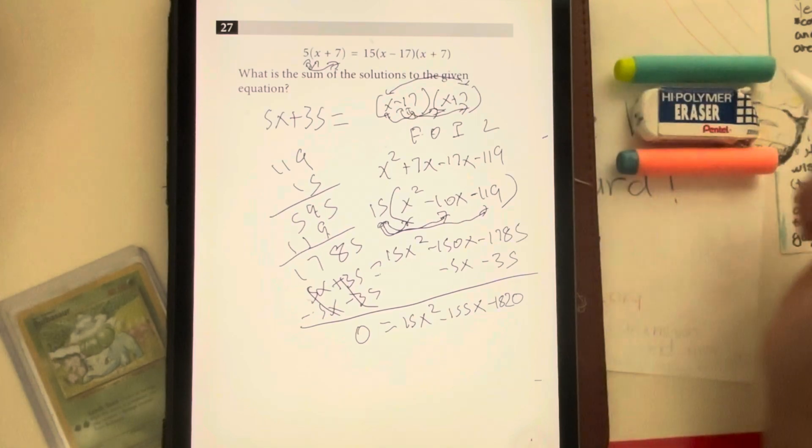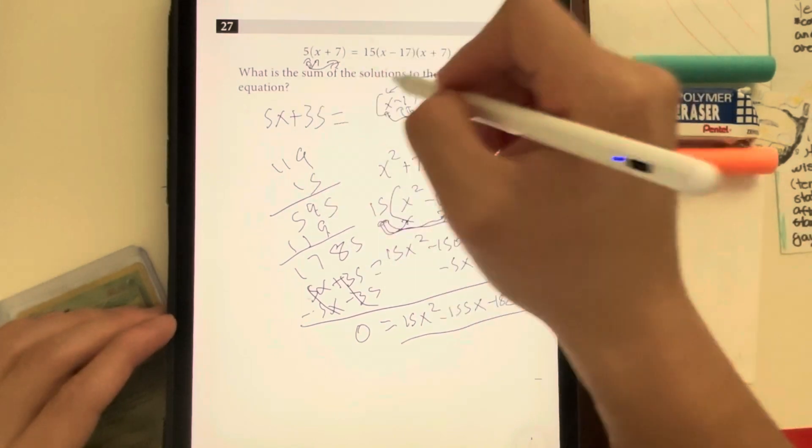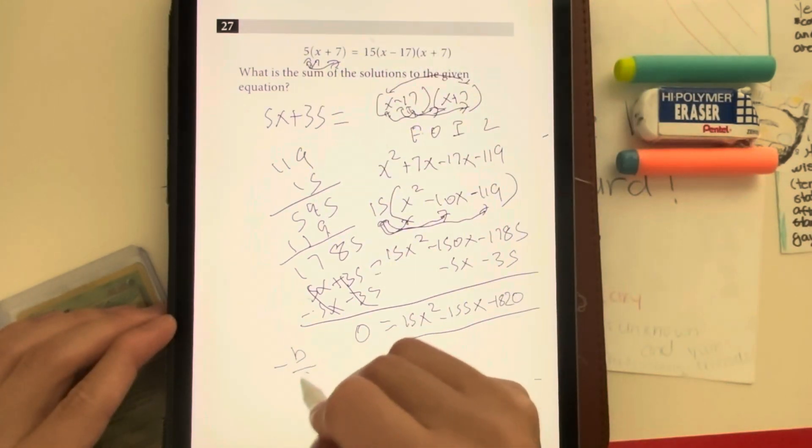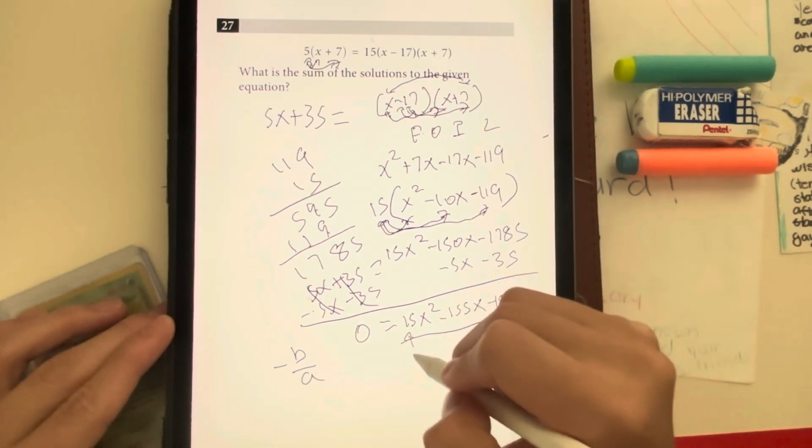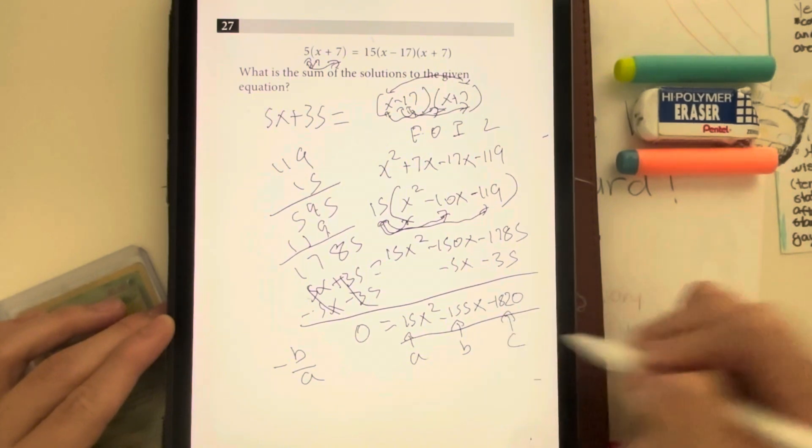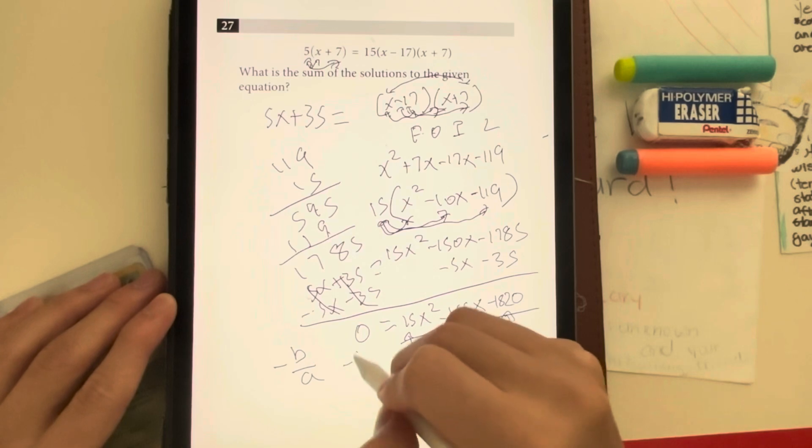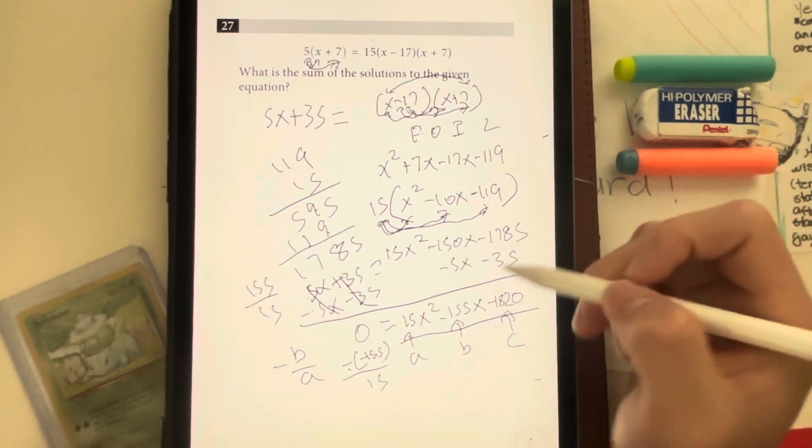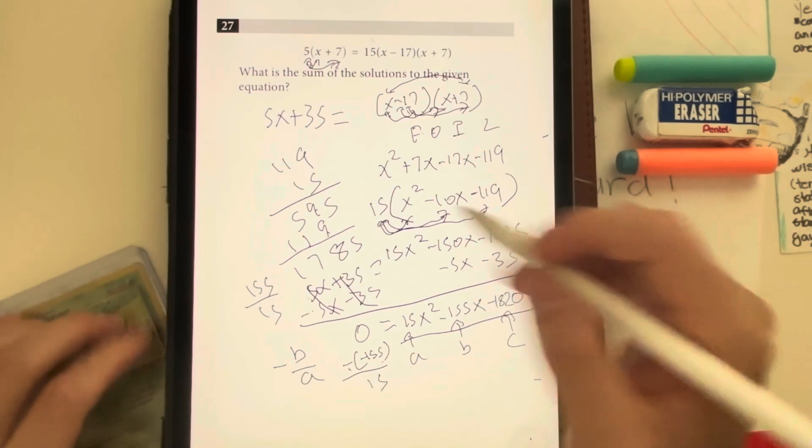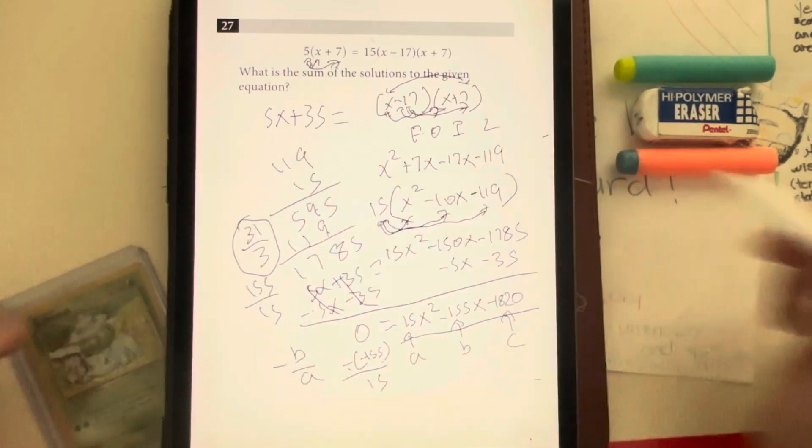Now since we're asking for the sum of the solutions, we actually don't have to solve this because this looks super complicated. What we have to remember is that the sum of the solutions in a quadratic is just equal to negative b over a. So simply put, this value is a, this value is b, and this value is c. So negative b over a is just negative of negative 155 over my value of a, which is 15. Negative negative 155 just gives me 155 positive over 15. Divide both sides by 5, I get 31 over 3. And that's my answer, 31 over 3.